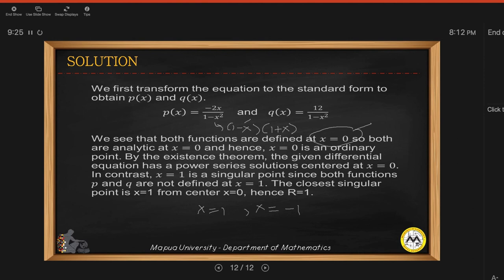And so by the existence theorem, the given differential equation has a power series solution at x equals 0. So x equals 1 and x equals negative 1 are the singular points. And then the closest singular point is x equals 1 or x equals negative 1. So the radius will be r equals 1.